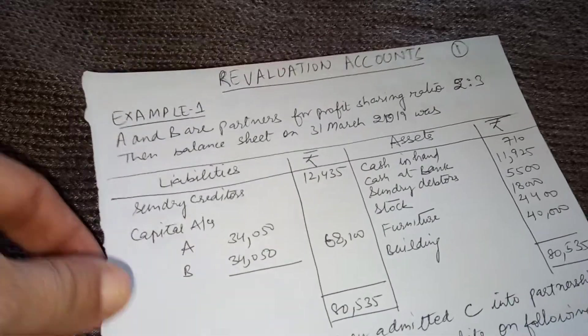The terms of admission are: number two, stock and furniture are to be reduced in value by 10%; number three, building is to be appreciated by 15,000; and number four, a provision of 5% is to be made on sundry debtors for doubtful debts. We need to show the revaluation account, capital accounts of partners, and the balance sheet of the new firm.